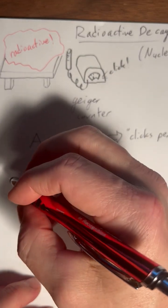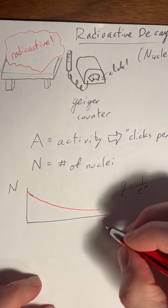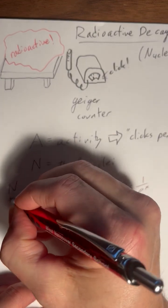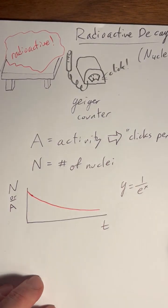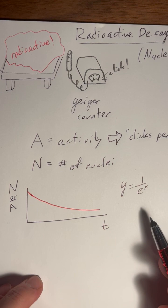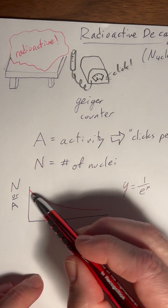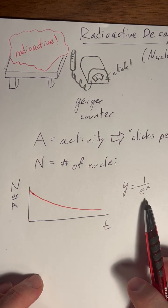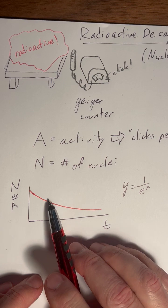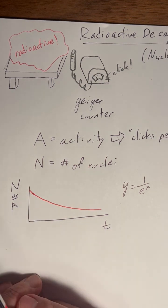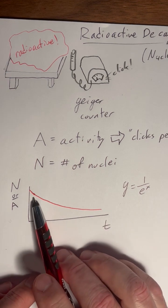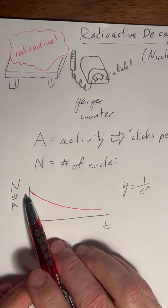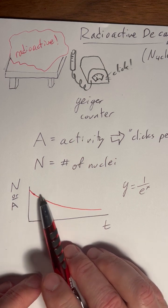For our radioactive decay, this is going to be the number of nuclei. And this is going to be time. It also could be activity, because the activity decreases per time as well. You can think of the activity as the slope here. What's interesting about this 1 over e to the x function is that the slope at any given point is going to be equal to the y value. So on 1 over e to the x, the slope right at the beginning is going to be negative 1. And this value, the y value is 1. Down here, where you're at, say, half of what you started with, your slope will be negative 1 half.